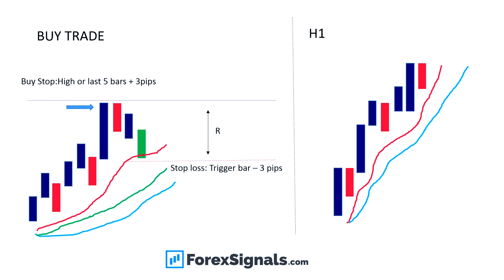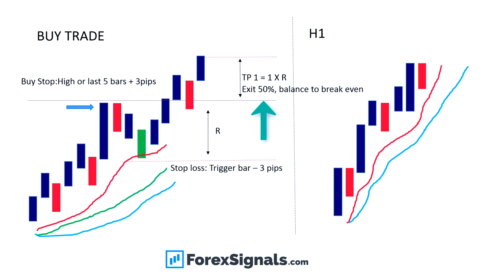Our stop is placed three pips below the low of the trigger bar. Now that we've established our initial risk, we put in our first take-profit target at one times the risk. The market moves up, hits our entry, and we are now long. Price moves up to our first profit target where we exit 50% of the trade and move the balance to break even. We then put in our second profit target at two times the initial risk, and sure enough price moves up to hit take-profit target two.